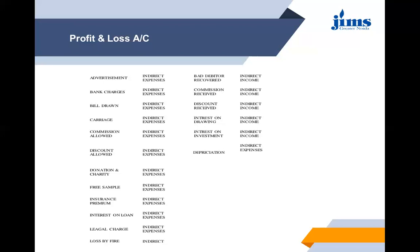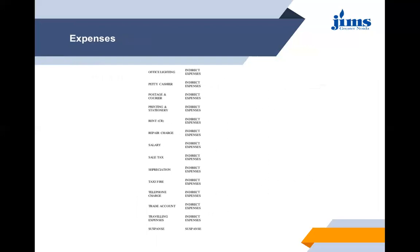Bad debts recovered — indirect income. Commission received is also indirect income. Discount received — indirect income. Interest on drawings — indirect income. Interest on investment — indirect income. Depreciation is an indirect expense. Office lighting — indirect. Petty cash — indirect. Postage and courier — indirect. Printing and stationery — indirect. Rent — indirect. Repair charges — indirect. Salary — indirect.